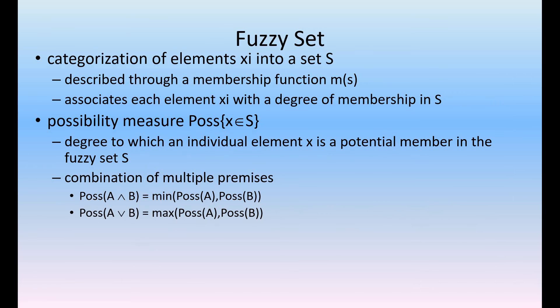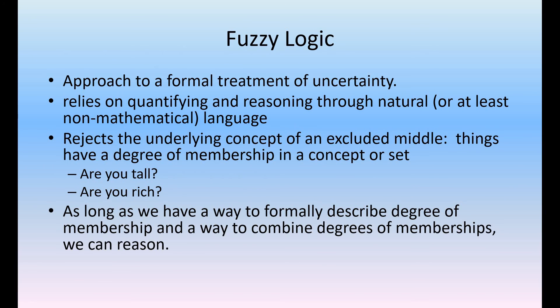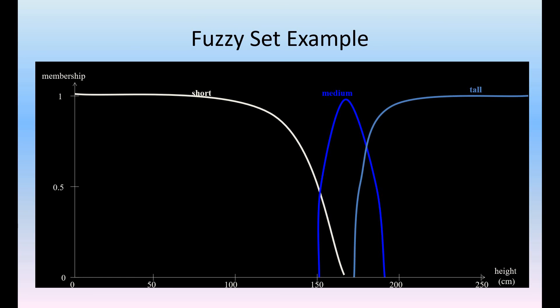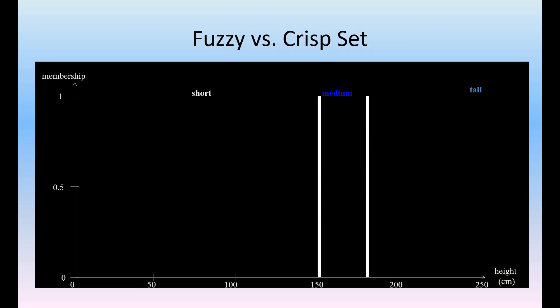Fuzzy logic is one of the good mechanisms to handle uncertainty, comparing to Dempster-Shafer theory and certainty factor rules. It quantifies natural language in a non-mathematical form to describe things like tall, rich, or not — and we describe a range: tall, short, medium tall. The membership function can be described accordingly.